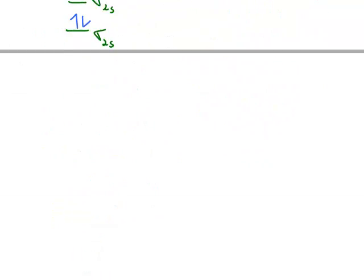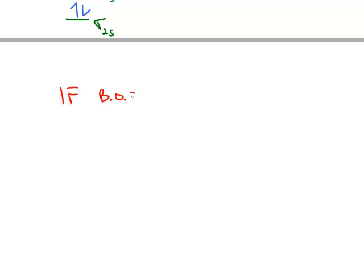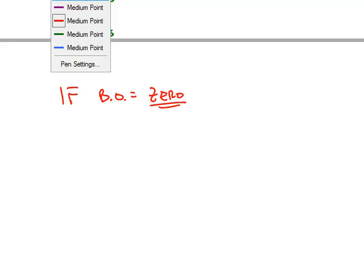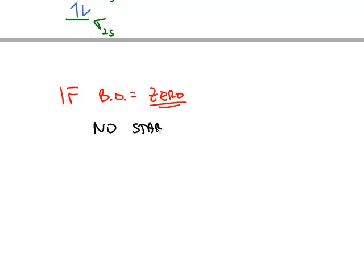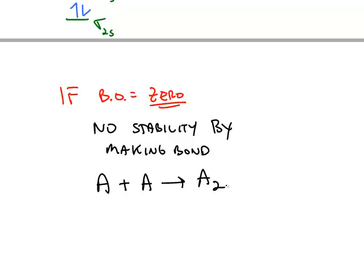If the bond order works out to be zero, that means there's no stability formed by making the bond. So if you have two separate atoms and they form a diatomic but the bond order is zero, that means it would be much preferable for the atoms to stay separated.